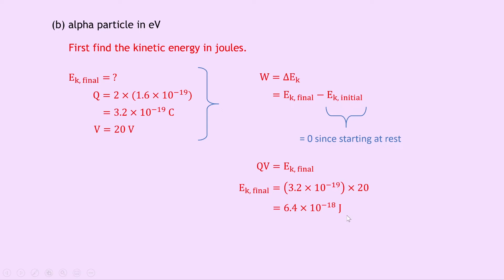But remember we want to get that into electron volts. So we now convert joules to electron volts. We can divide this time by one electron volt in joules to get the number of electron volts. We get 6.4 times 10 to the minus 18 divided by 1.6 times 10 to the minus 19 is equal to 40 electron volts.